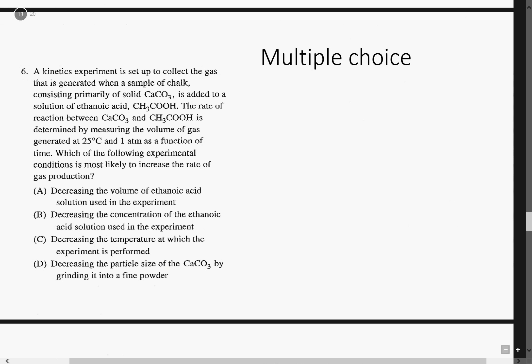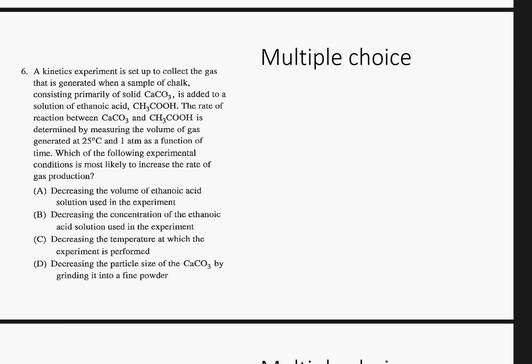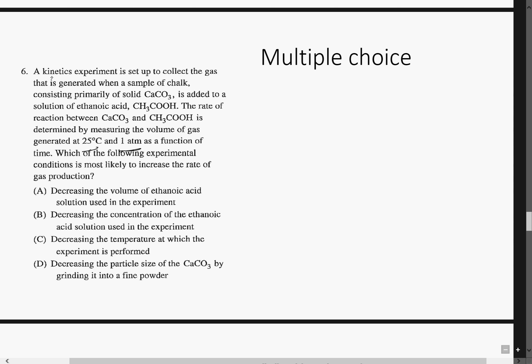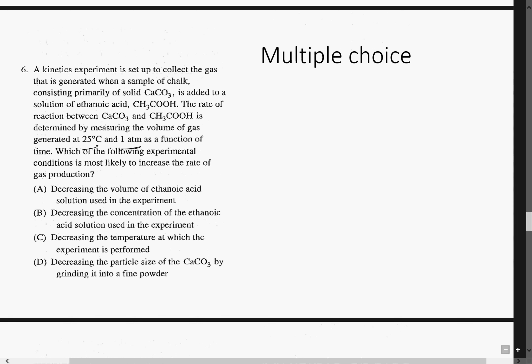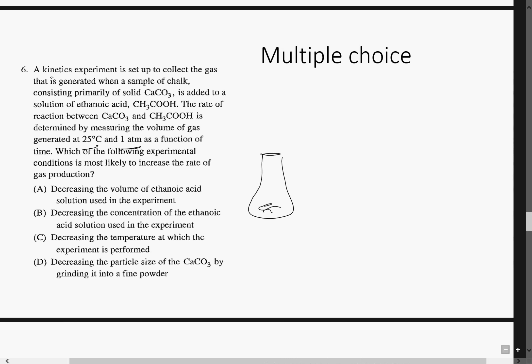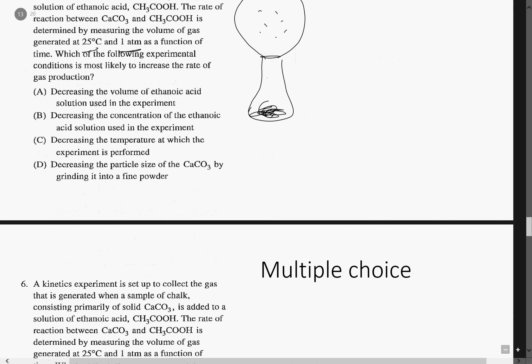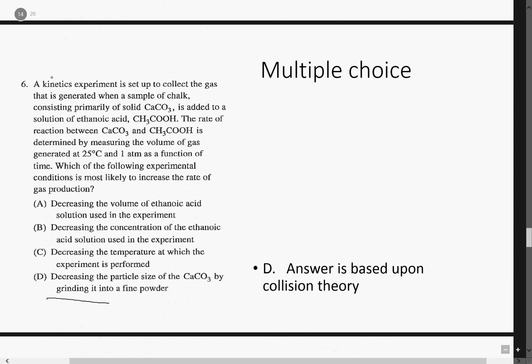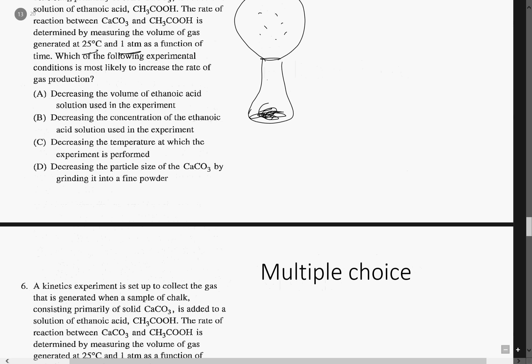Can an experiment set up to collect a gas generated when a sample of chalk — calcium carbonate — is added to a solution of ethanoic acid? The rate of reaction between the carbonate and the acid is determined by the volume of gas produced. They're given a temperature and a pressure. What experimental condition is most likely to increase the rate of gas production? The answer is D: decreasing the particle size. If we crush the chalk up, it allows for more interaction between particles at a faster rate, which is very true.